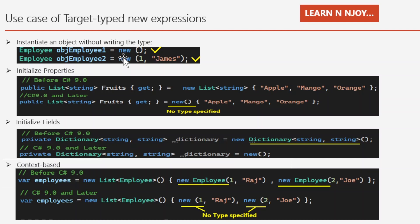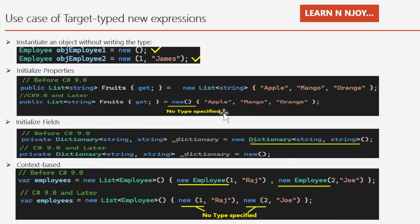The next use case is to initialize properties. Before C# 9.0, we'd write: public List<string> Fruits { get; } = new List<string> { "Apple", "Mango", "Orange" }; In C# 9.0 and later, the List<string> type on the right-hand side is not required. We simply write: public List<string> Fruits { get; } = new { "Apple", "Mango", "Orange" }; — that's another use case where we can use target-type new expressions.